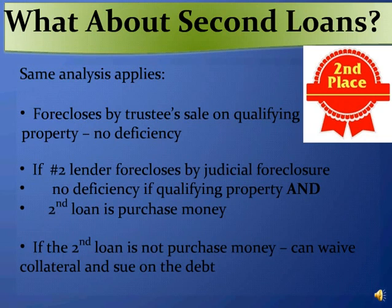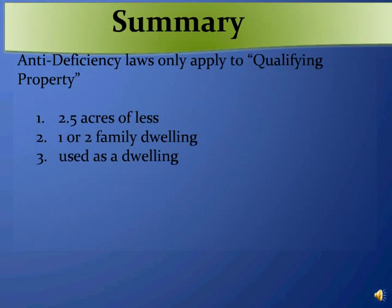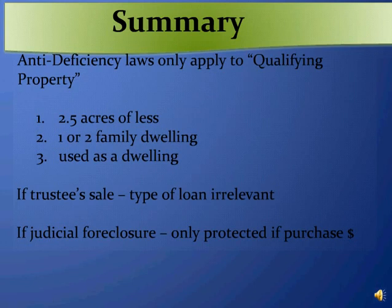In summary, in order to qualify for protection under both of Arizona's anti-deficiency statutes, the property must be qualifying property — two and a half acres or less, a one or two family dwelling actually utilized as a dwelling by someone. If the lender is pursuing a trustee sale, then the type of loan is irrelevant. If the lender is foreclosing by judicial foreclosure, the borrower is only protected if it's qualifying property and it's a purchase money loan.